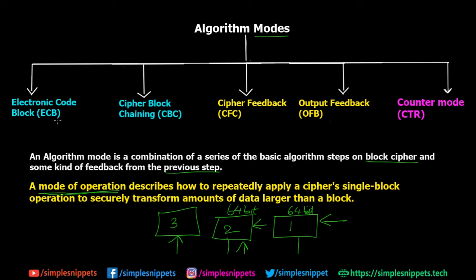The five modes, as you can see on screen, are: Electronic Code Block — probably the easiest one — then Cipher Block Chaining, Cipher Feedback, Output Feedback, and Counter mode. We'll be studying each of these five modes individually in detail with proper diagrams and explanations, so that will be very clear.